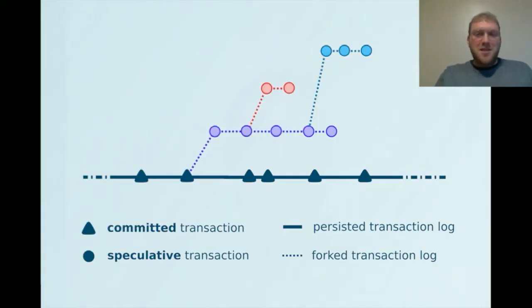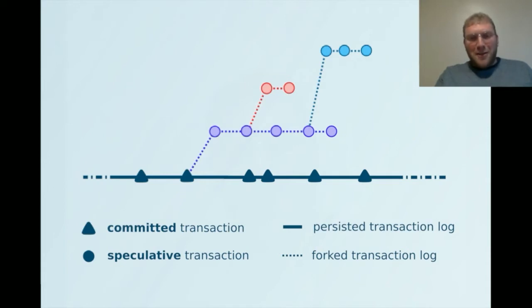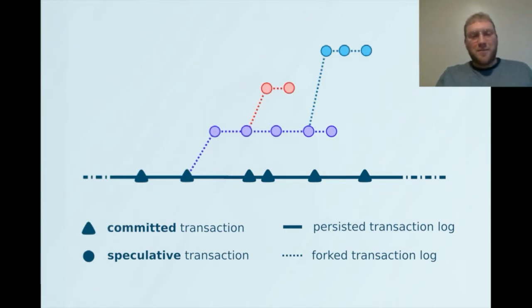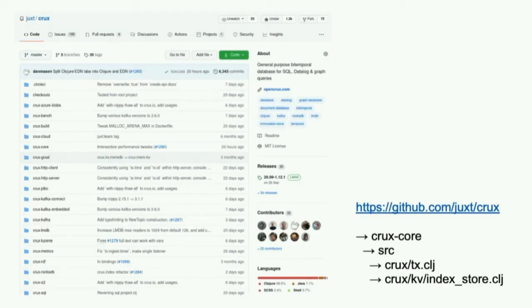Another fortunate consequence of being able to merge indices in this way is the ability to easily offer speculative transactions. We introduced speculative transactions to Crux after a significant amount of user requests — it seems to be the sort of feature that once you're aware of it and have used it a few times, you can't live without it. Because once you have the ability to efficiently merge indices, there's very little that actually needs to change internally to implement speculative transactions. A speculative transaction is simply an in-flight transaction that's never committed. If you're interested in more, look in the GitHub repo under the Crux Core module, starting with the CruxTX and CruxKV index store namespaces.